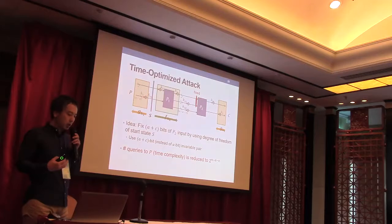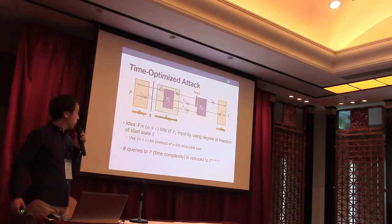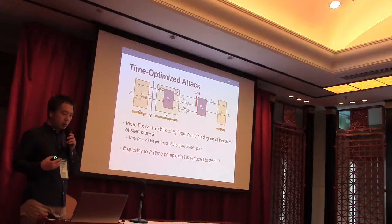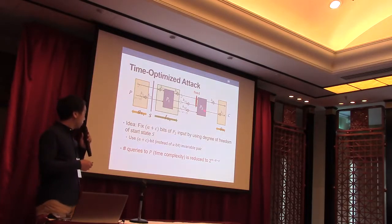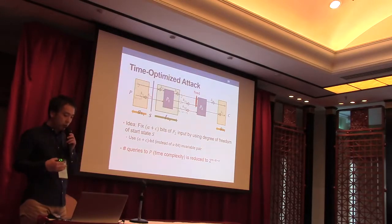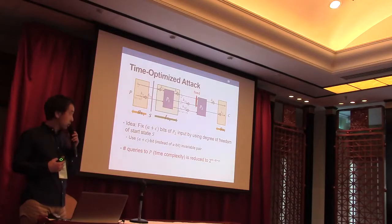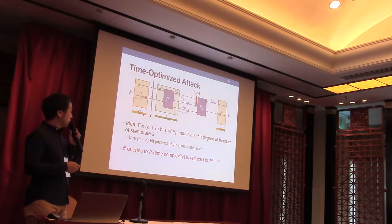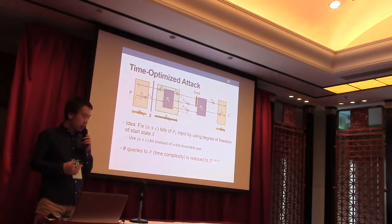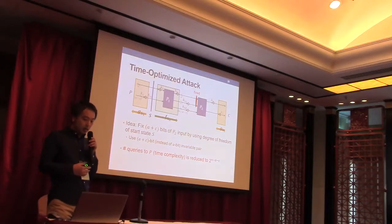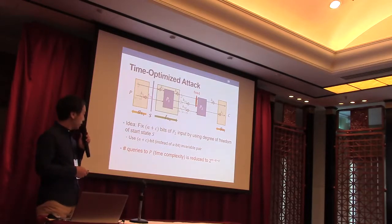We also propose a time-optimized variant. The main idea to reduce the time complexity is that we fix some bits of P2 input by using the degrees of freedom of start state S. So we can fix both c bits here. Then the number of queries to the internal permutation P, which is time complexity, is reduced to 2 to the n minus a minus c.